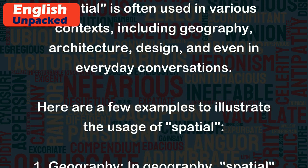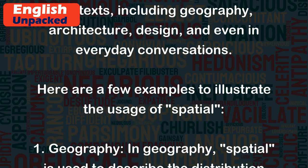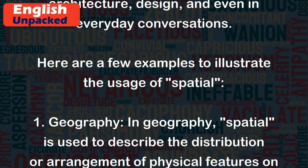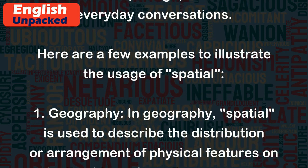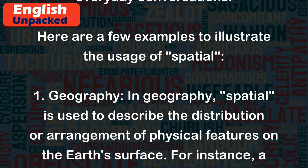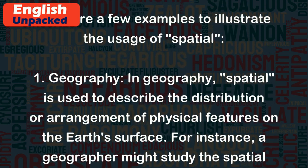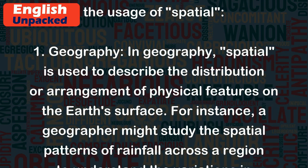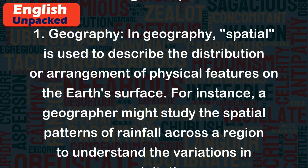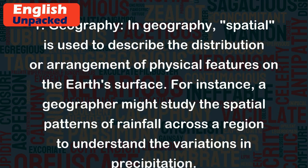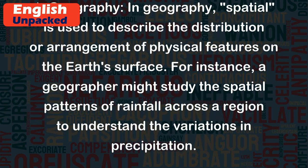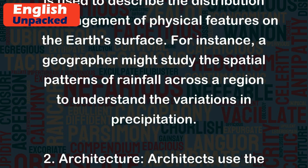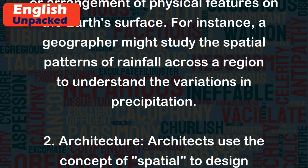Here are a few examples to illustrate the usage of 'spatial.' One: Geography. In geography, 'spatial' is used to describe the distribution or arrangement of physical features on the Earth's surface. For instance, a geographer might study the spatial patterns of rainfall across a region to understand the variations in precipitation.